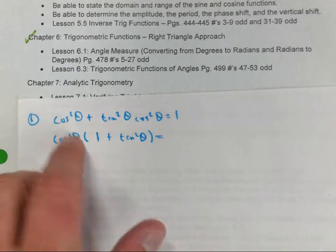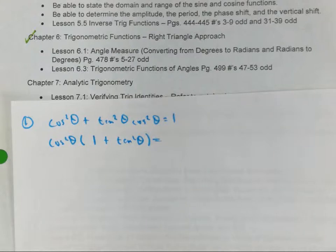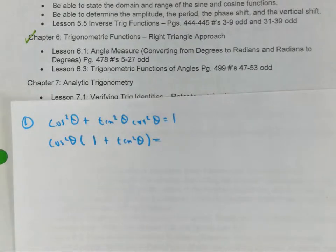We're trying to prove that this side equals 1. Does 1 plus tangent squared pop out to you? What's that equal to? Secant squared. Do you remember your Pythagorean identities? You will not have those in your file — you've got to know them. Sine squared plus cosine squared equals 1, 1 plus tangent squared equals secant squared, 1 plus cotangent squared equals cosecant squared.